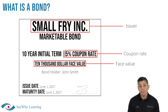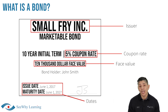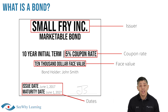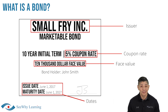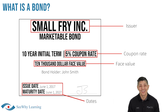The difference between the bond's issued date and the maturity date is the bond's initial term. Be careful though: if a bond was initially issued as a 10-year bond, in one year it would be referred to as a 9-year bond, in two years it will be an 8-year bond, and so on.